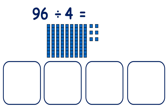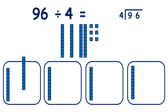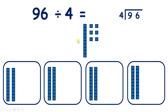Now pause the video and see if you can answer 96 divided by 4 using short division. We start with 9 tens divided by 4 — let's share out those 9 tens between 4 groups. We now have 2 tens in each group, and 1 that we can't share out, because with division we need to share equally. So 9 divided by 4 is 2 remainder 1.